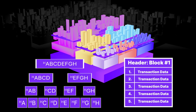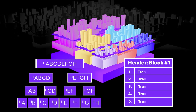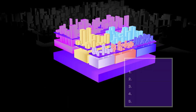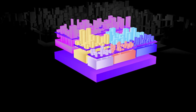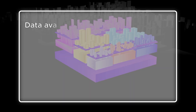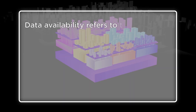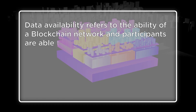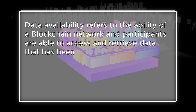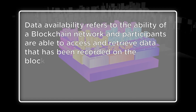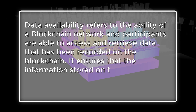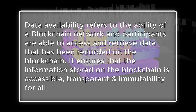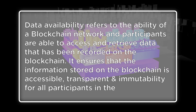This ensures that anyone can replay the blockchain's history and watch an instant replay when someone is suspected of breaking the rules. So in a blockchain context, data availability refers to the ability of blockchain networks and participants to access and retrieve data that has been recorded on the blockchain. It ensures that information stored on a blockchain is accessible, transparent, and immutable for all participants in the network.